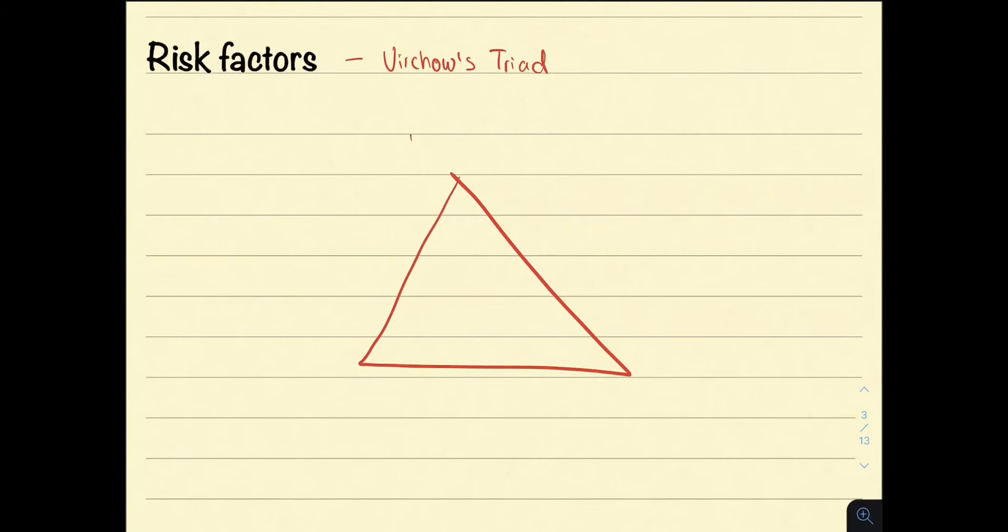To appreciate the risk factors for thrombophilia, we need to consider Virchow's triad. We shall discuss the triad and the associated features. The triad consists of disruption to blood flow, endothelial damage and a hypercoagulable state.